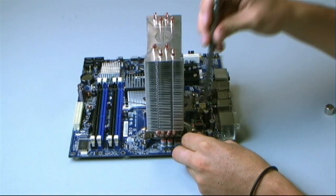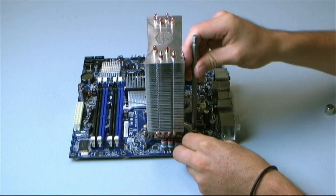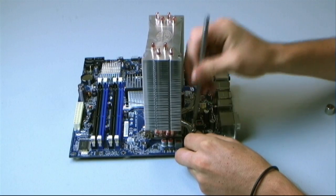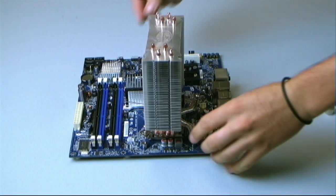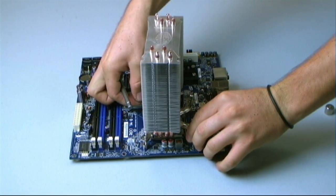Then with the Phillips screwdriver, just simply screw in one side. And then go diagonally across to the other one. And repeat the process.